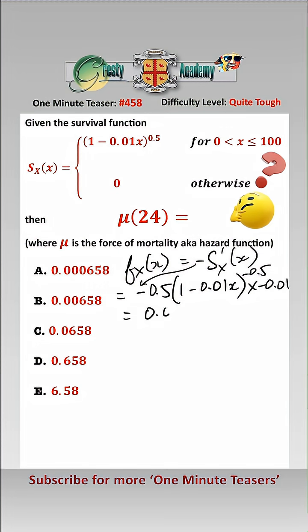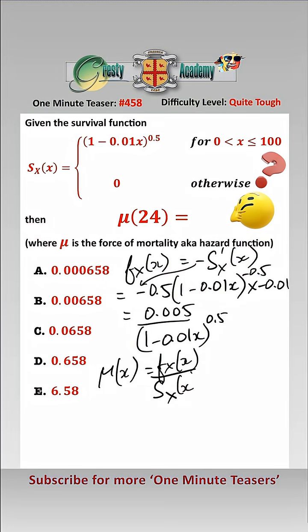which gives us 0.005 over 1 minus 0.01x to the 0.5. And then mu of x is equal to fx of x over sx of x.